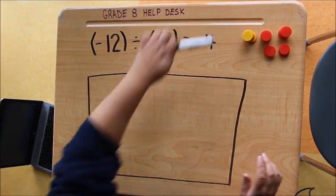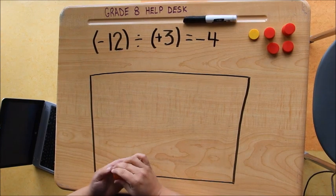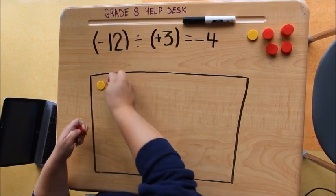Well, we can't. No matter how many sets of positive 3 we put in, we'll never be able to get 12 red tiles in there.